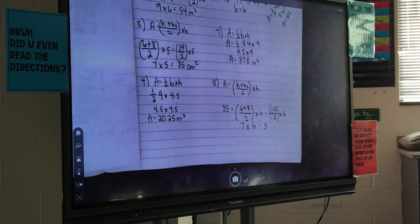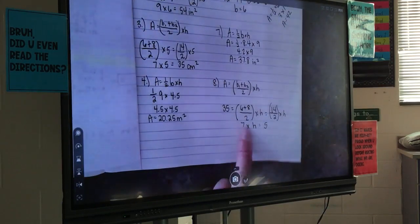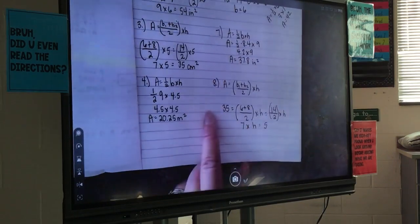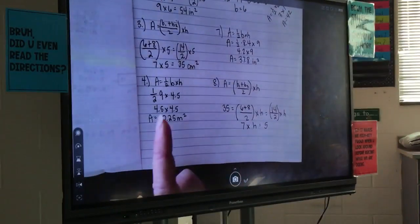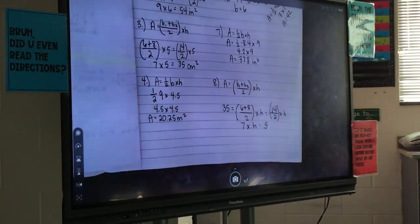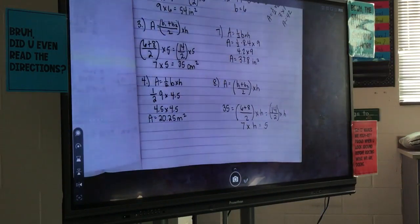Then when you plug it in, you can solve to where you get to what your base would essentially be. And then you have to say, okay, well, what times seven gives me 35? Five. So it's just kind of working backwards from instead of saying here's the numbers find the area, it says here's the area find a part of the formula.